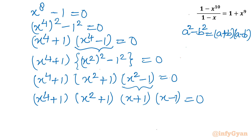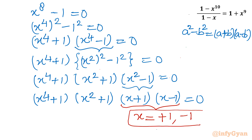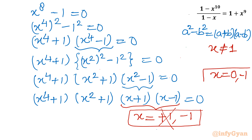From the last two factors we immediately get two solutions: x = +1 and x = -1. So we have 3 solutions so far including x = 0. However, as per our domain, x cannot be equal to 1, so we reject x = 1. The accepted real solutions so far are x = 0 and x = -1.